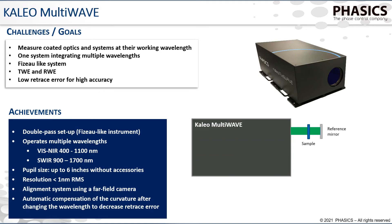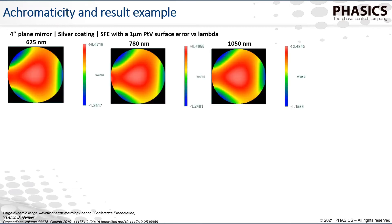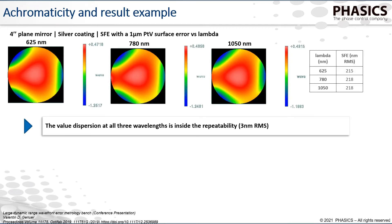In terms of use, it is quite comparable to a Fizeau interferometer and has the same kind of alignment systems, like a far-field camera for easy tilt alignment. As a first example of achromatic measurement, we tested a mirror with a metallic coating at 625, 780, and 1050 nanometers and compared the results. In terms of surface form error (SFE), we get a difference of less than 3 nanometer RMS between the different wavelength measurements.